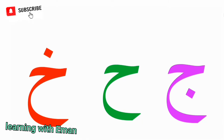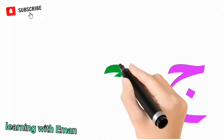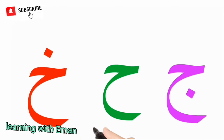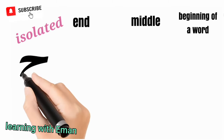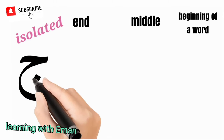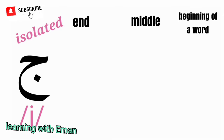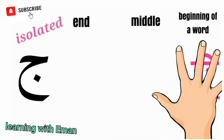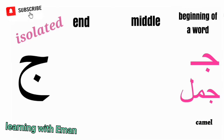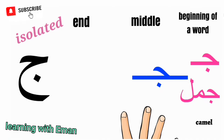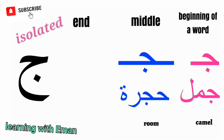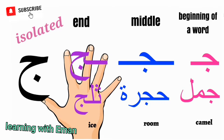The next letters of the Arabic alphabet are Jim, Ha, and Kha. We are grouping these letters together because their basic shape looks the same — only the dots are different. Jim corresponds to the English letter J. At the beginning of a word, like in a word meaning camel. At the middle of a word, like in a word meaning room. At the end of a word, like in a word meaning ice.